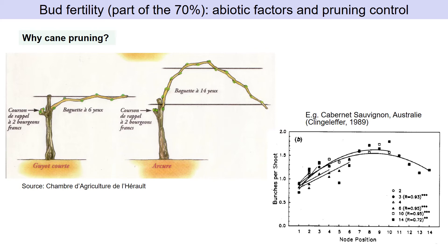As already mentioned, around flowering in year one, the bottom latent buds are normally differentiated. On the figure on the right-hand side, you see a gradient in terms of latent bud differentiation along a cane. There is a decrease in bud fertility at the end of the season because, at the end of the season, climatic conditions are no longer good enough for the latent buds to properly achieve their differentiation.